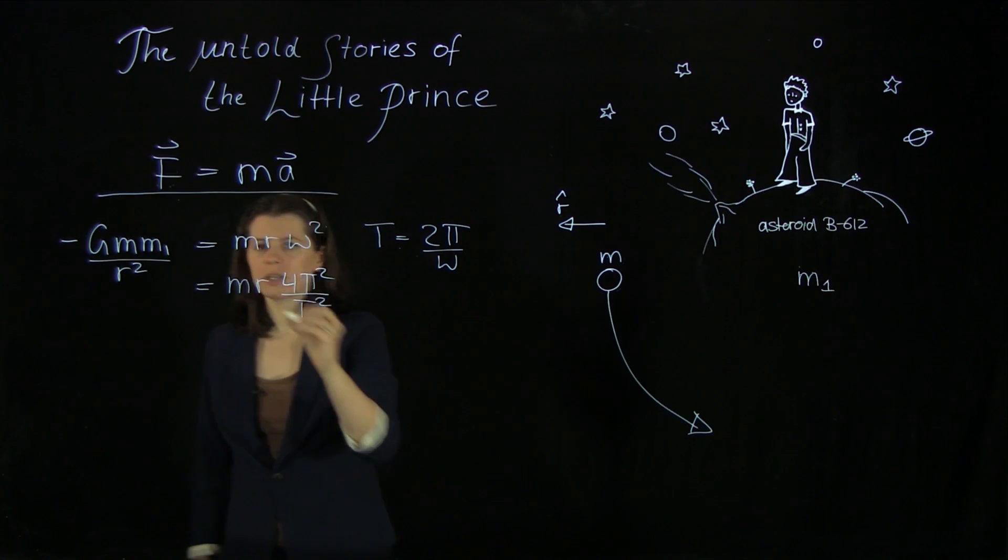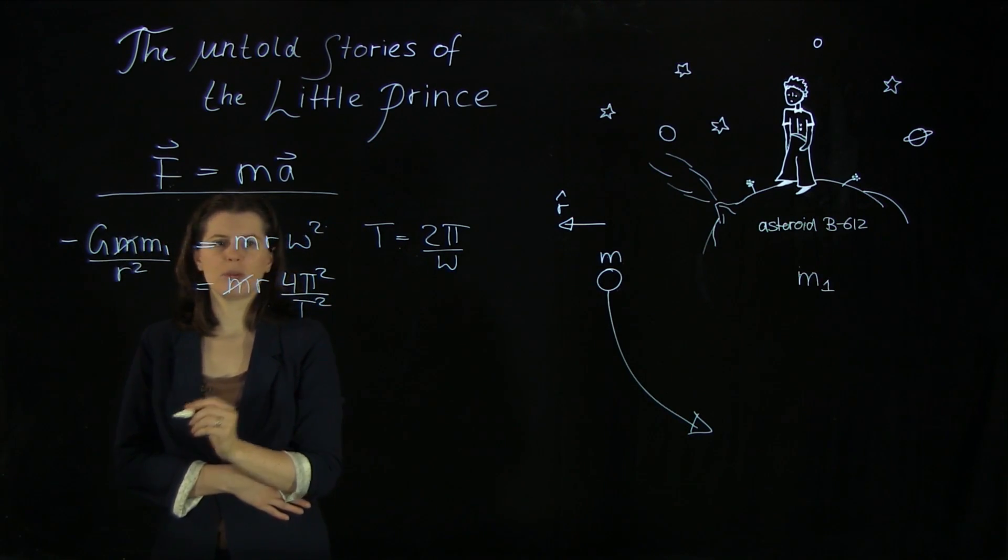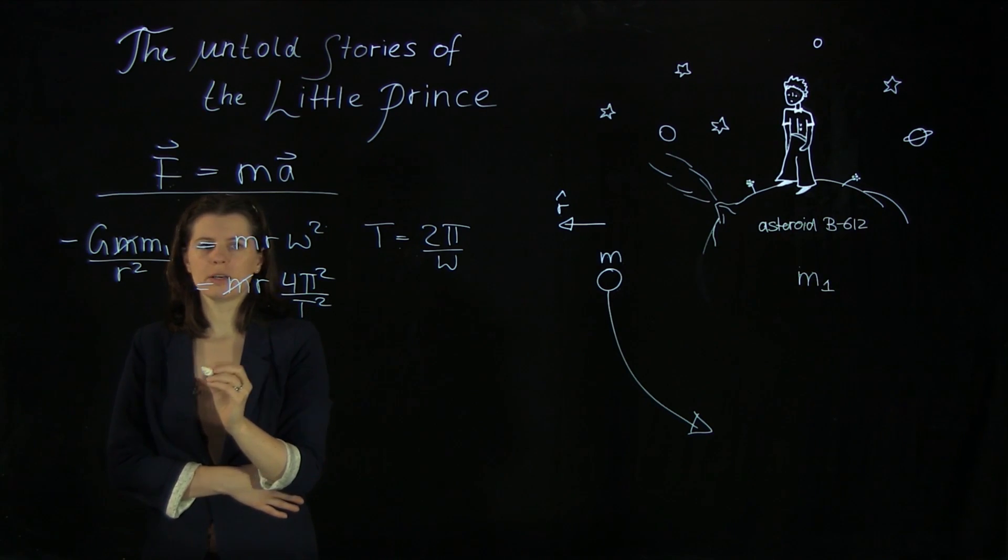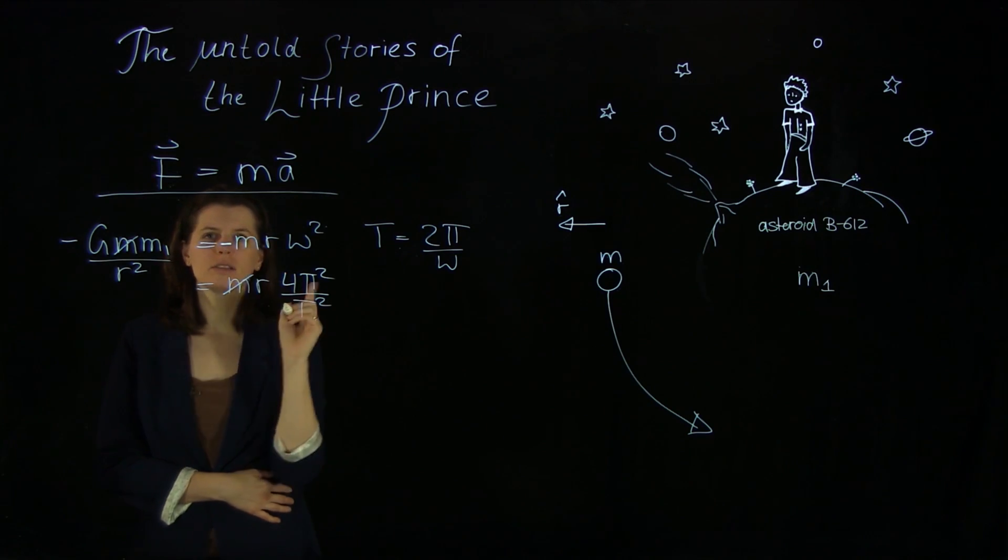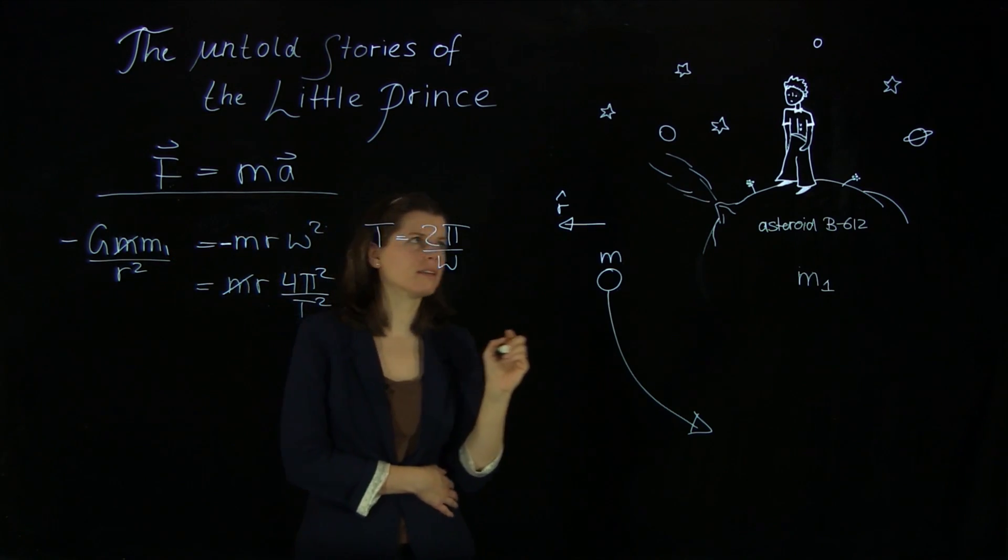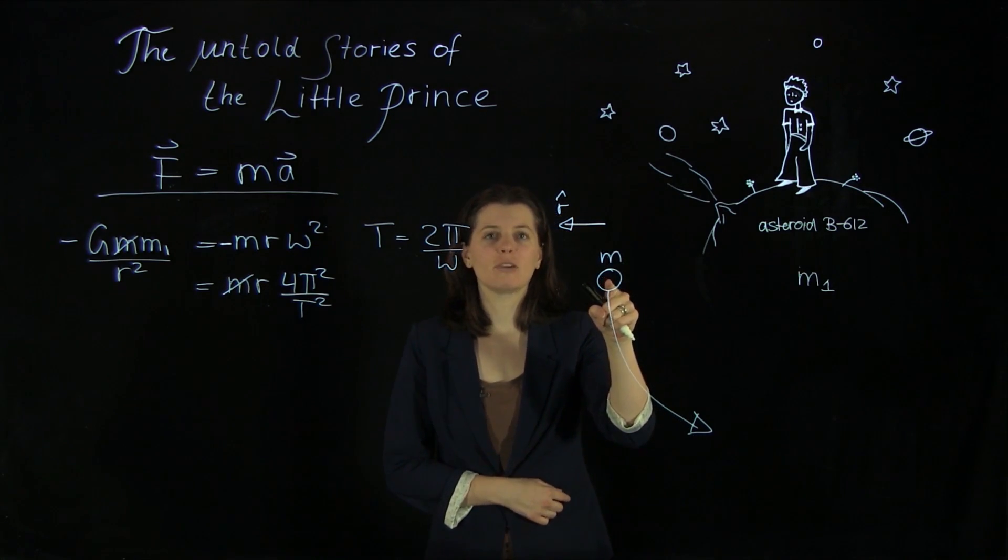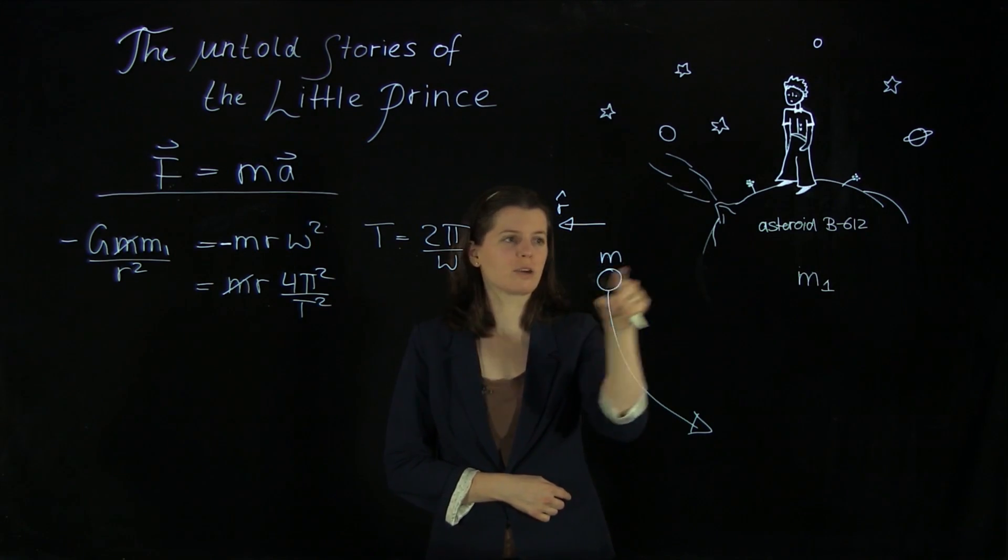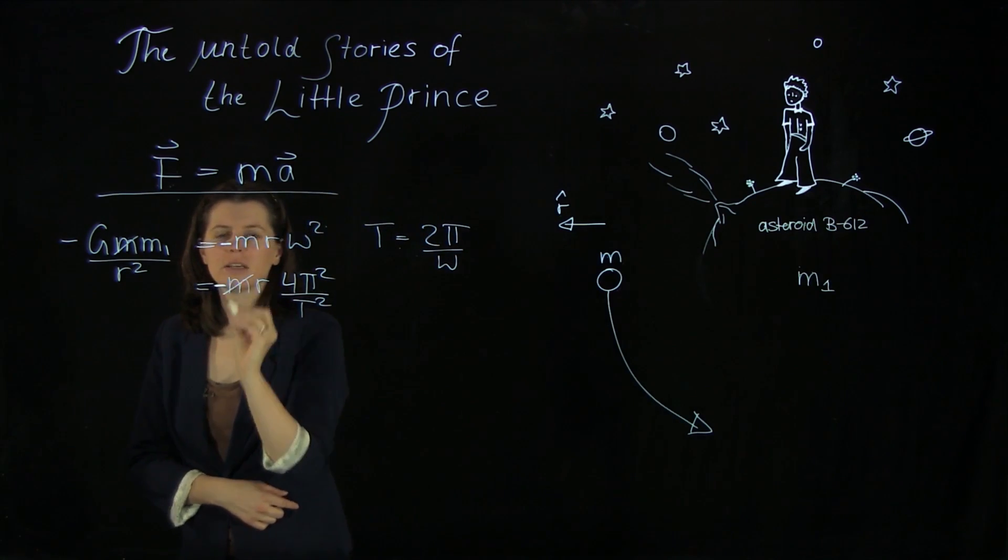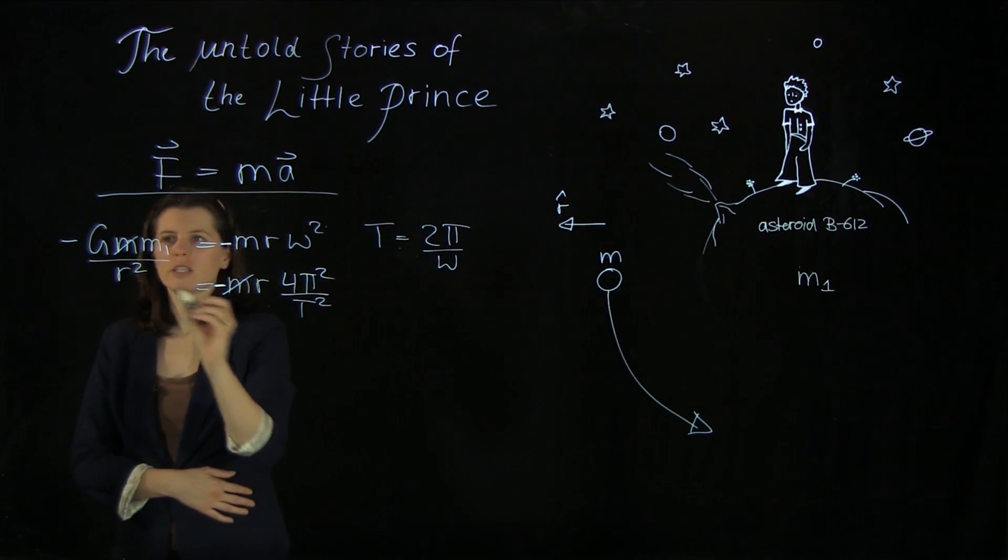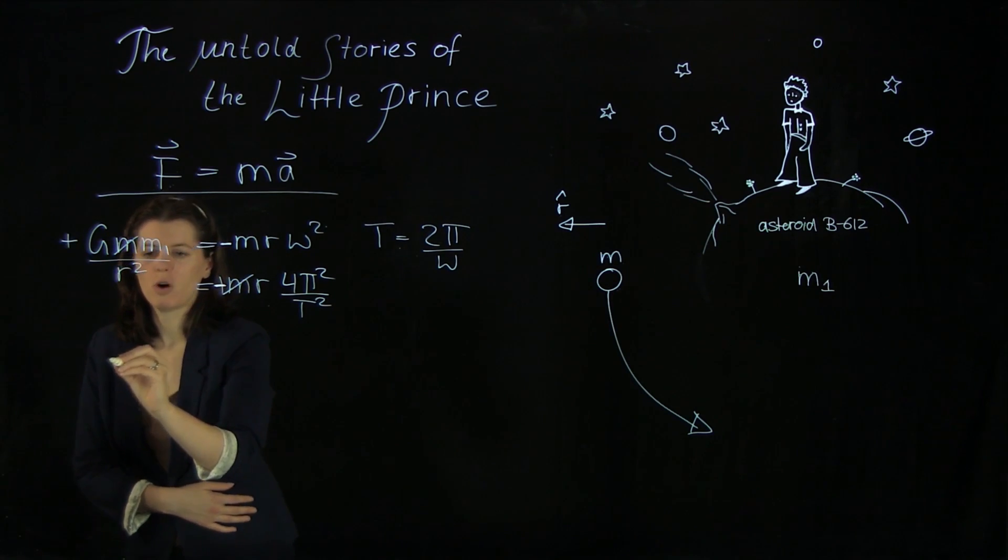And, well, this m here will cancel out. And now we have to solve this for r. And of course, we have a minus sign here. Because in the life of the Little Prince, of course, the acceleration is not going outwards. It's going inward. So we better give this a minus here and here as well. And we will actually see that that then cancels out against this one.